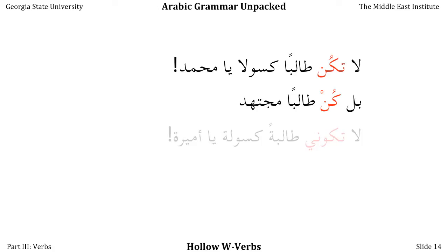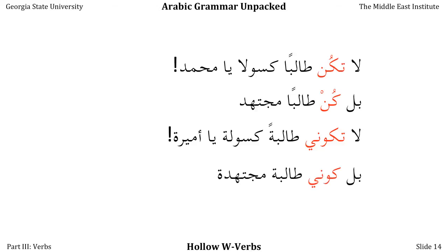To form the affirmative command KUN — 'be' — we take the TA off the negative command and add back a helping vowel if needed. We don't need one here because our long vowel has helpfully become a short vowel. So the command is KUN. But if I'm talking to Amira, she gets long vowel suffixes because she's a woman. So I say: لا تكوني طالبةً كسولةً يا أميرة — 'Don't be a lazy student, Amira.' Because we have a long vowel suffix, we keep the long vowel in the middle of the verb — it stays WAW and doesn't become DHAMMA. So: بل كوني طالبةً مجتهدة — 'Be a good student.' The pattern is easy to learn once you get used to it, especially with the most commonly used vocabulary words in this verb group.